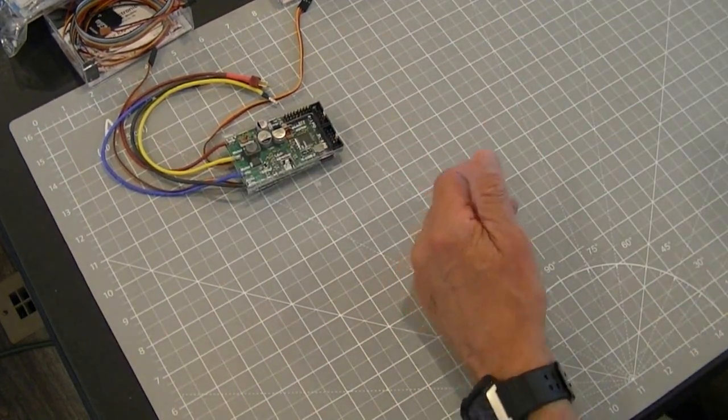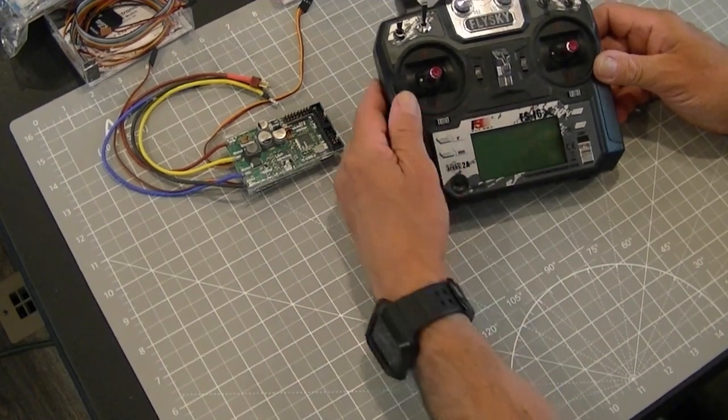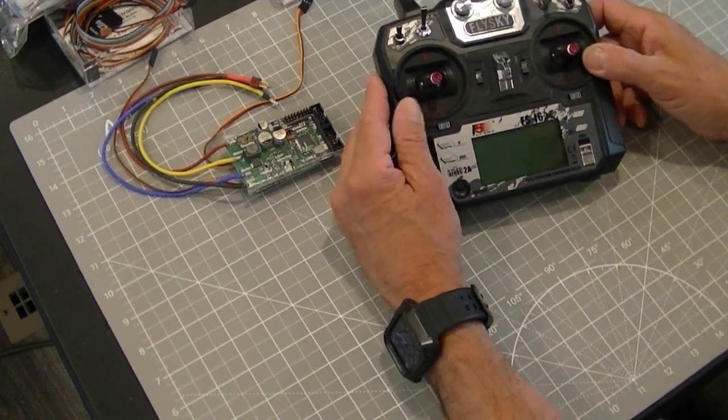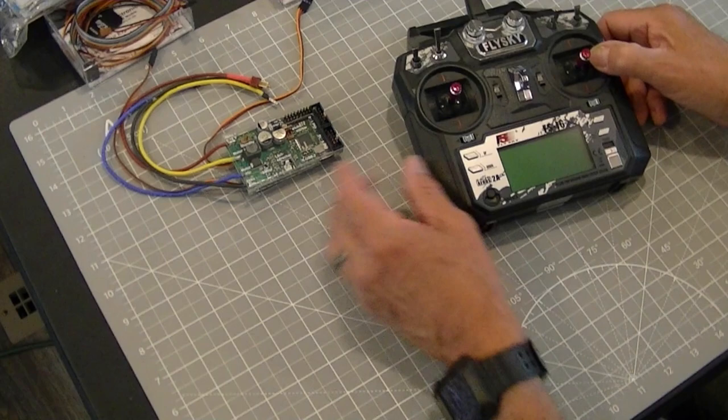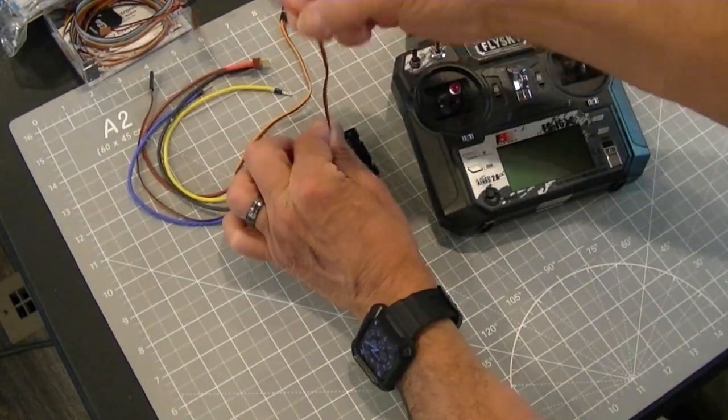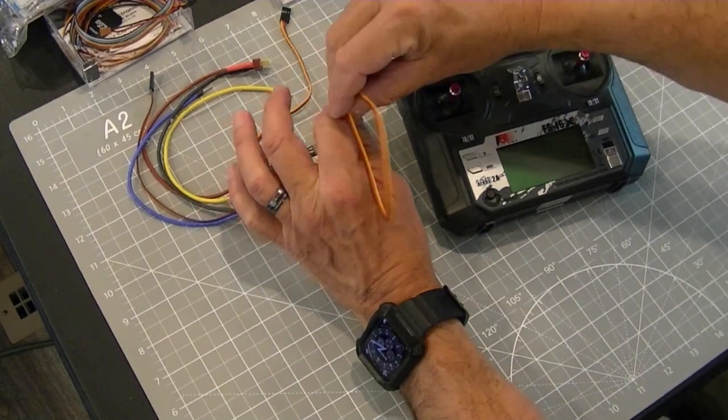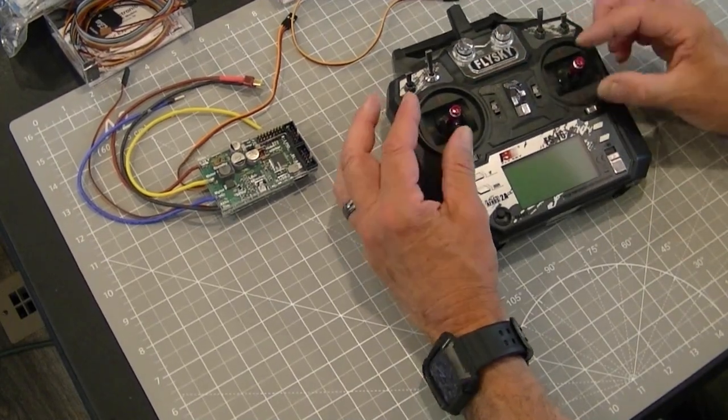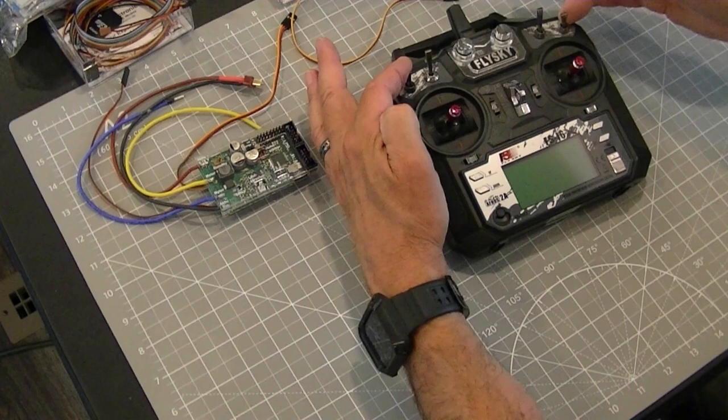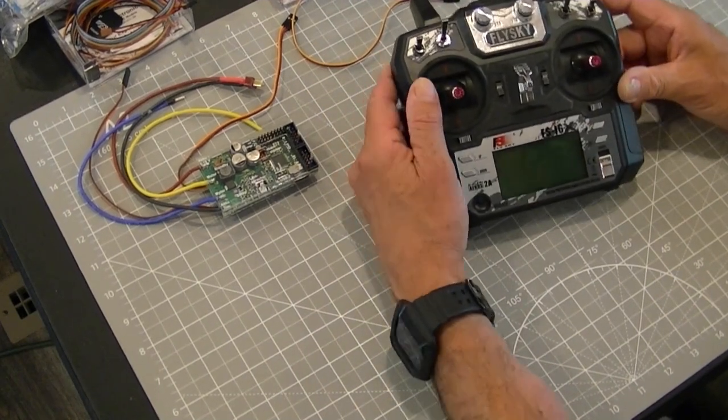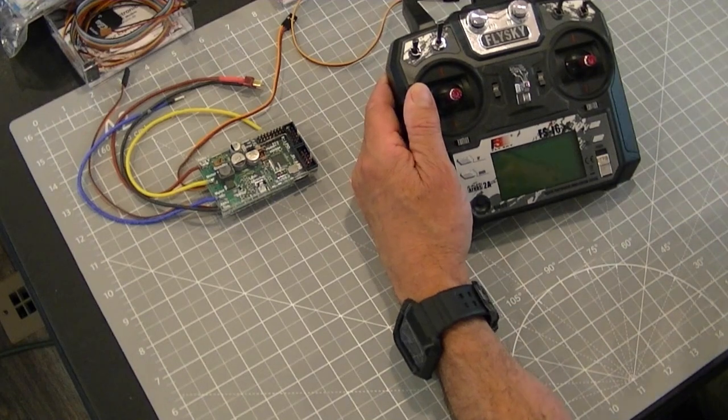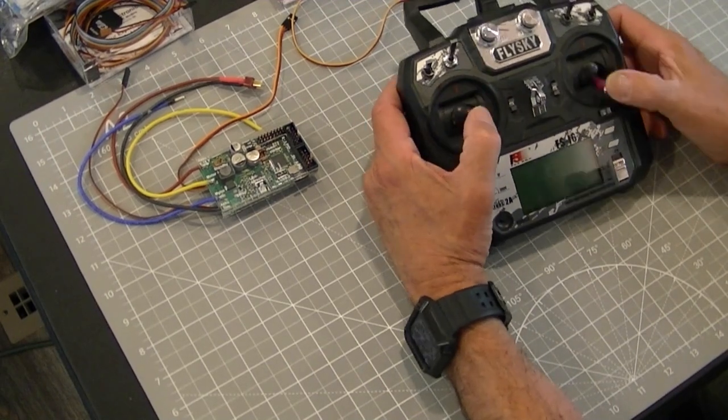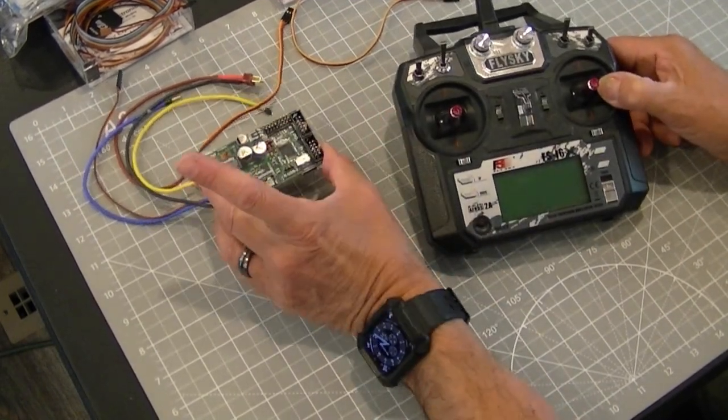The FlySky FS-I6X looks the same, has the same switch and knob layout, but it supports SBUS and it's 10 channels. So now what that means is you only need one cable to go between this unit and the receiver and immediately all 10 channels will be available to you. So you can use every knob and every switch. This radio works really nicely with the SFR.